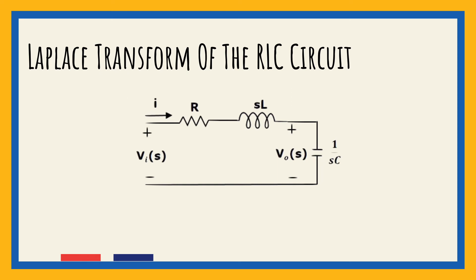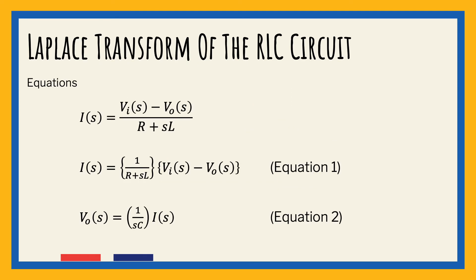From that circuit, we can write I(s) = [V_i(s) − V_o(s)] / (R + sL). For equation 1, we have I(s) = [1 / (R + sL)] × [V_i(s) − V_o(s)]. While for equation 2, we have V_o(s) = [1 / (sC)] × I(s). After getting these equations, we can now draw the block diagrams of these two equations individually, and then combine those block diagrams properly in order to get the overall block diagram of the series RLC circuit.